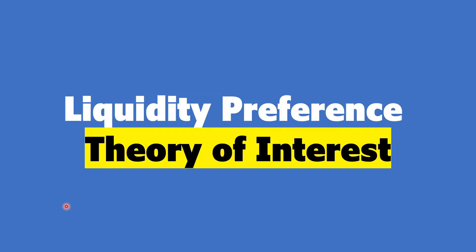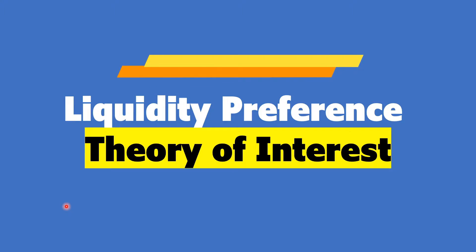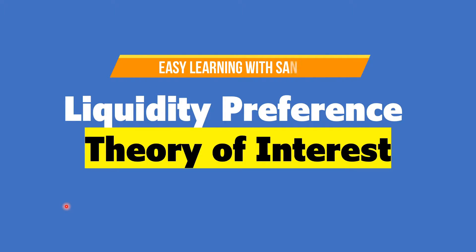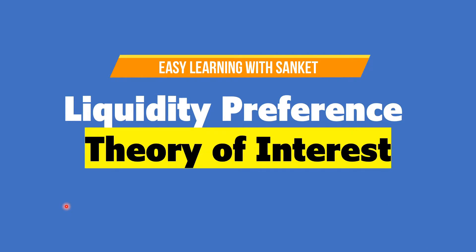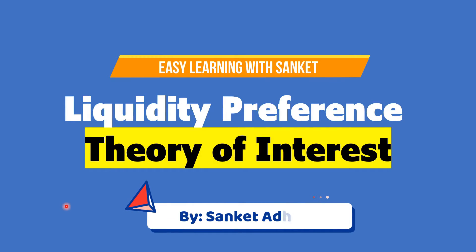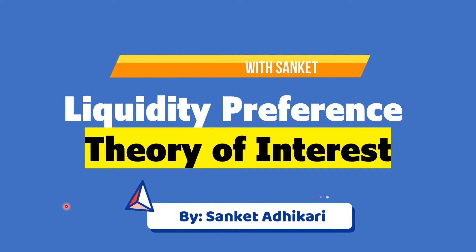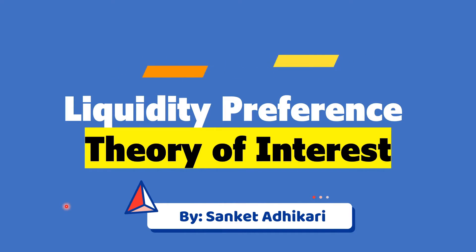Welcome again to Easy Learning with Sanket. Today's topic is the Liquidity Preference Theory of interest. This concept was given by John Maynard Keynes, which explains how individual preference for liquidity determines the interest rate with reference to the given supply of money.